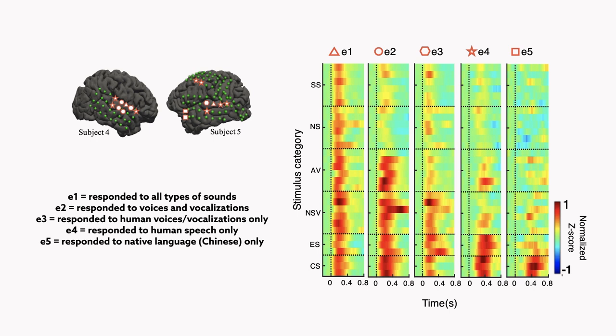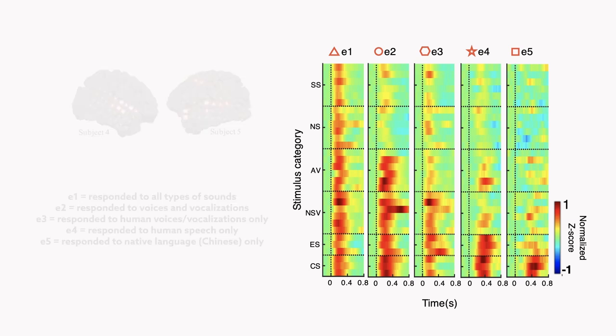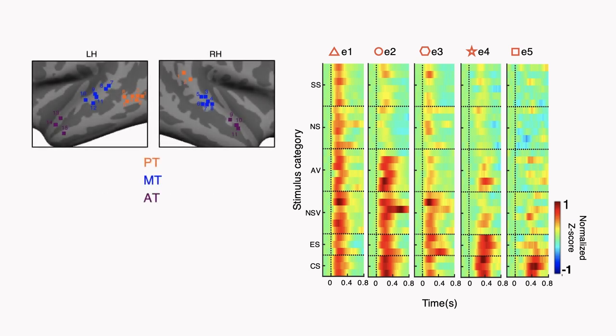In the temporal lobe in both hemispheres, the voice-specific electrodes were located in three distinct clusters, or patches: the posterior, middle, and anterior temporal patches, or PT, MT, and AT.